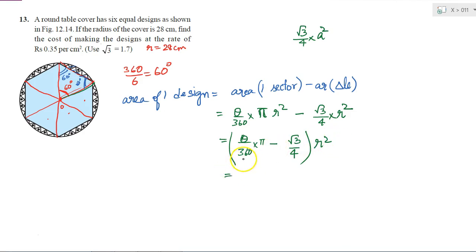So what is the value of r²? So what will that come out as? Theta is equal to 60 degrees. So 60 by 360 into π, I am taking it as 22 by 7,